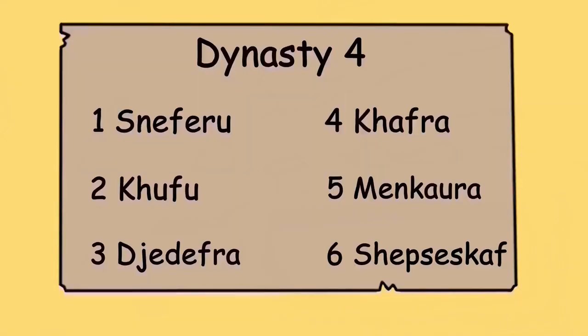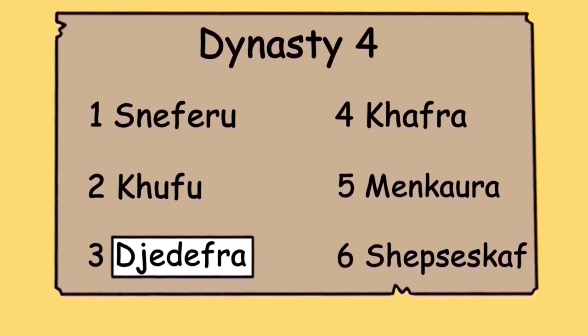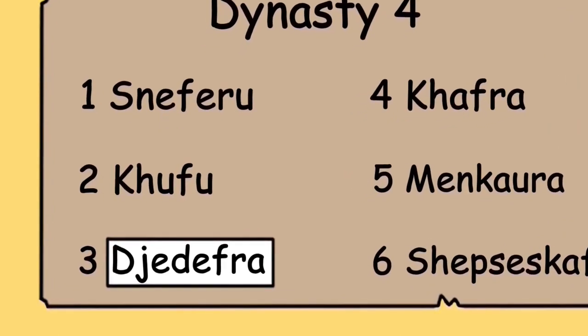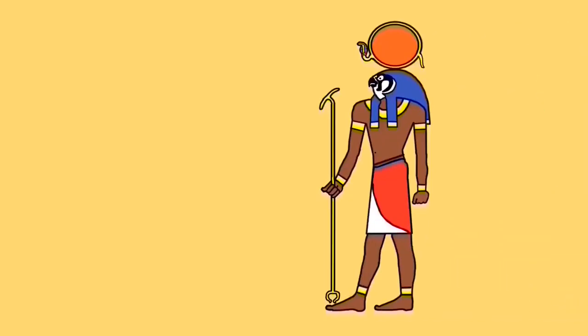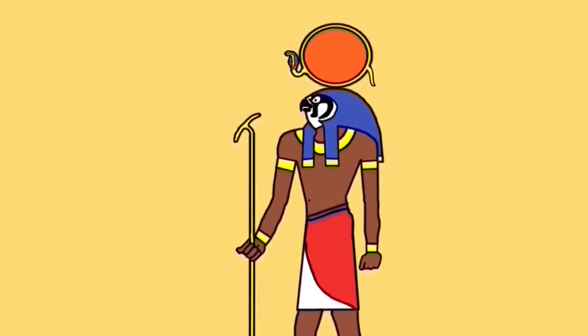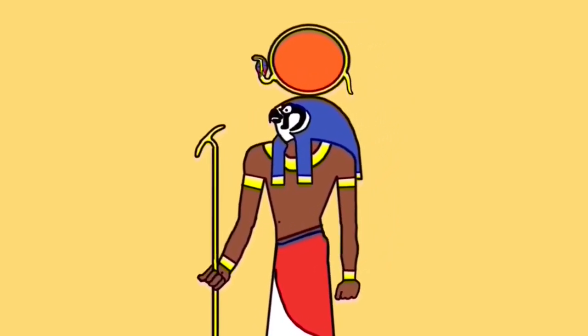Khufu's son and successor Djedefre decided to build his pyramid elsewhere, five miles north of Giza. Unlike his father's however, Djedefre's did not last the ages, and today it's in ruins. His main significance is that he was the first pharaoh to adopt the god Ra within his name. Not to be confused with Horus, who I have mentioned in previous episodes, Ra was another hawk-headed god, a sun god, and during the third and fourth dynasties, his popularity and importance within Egyptian religion and society was on the up. He was one of the most worshipped gods in the Egyptian pantheon.